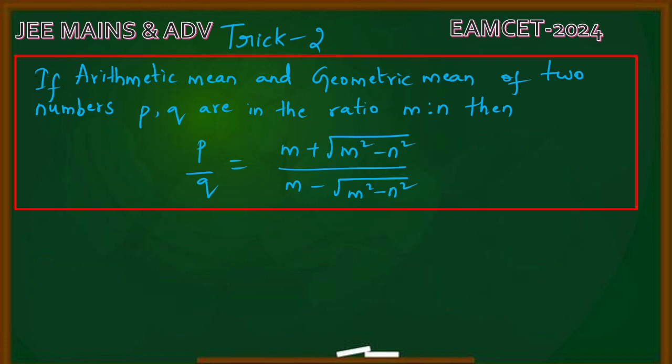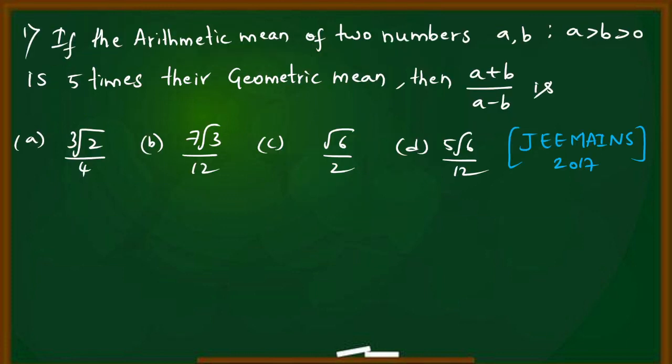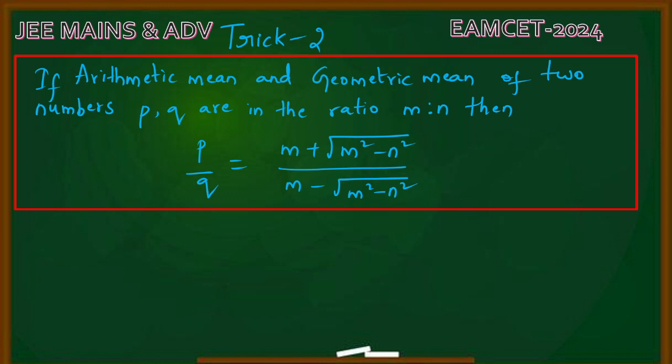Type 2 is important. In JEE Mains 2017, the same model question was asked. Trick number 2: If arithmetic mean (AM) and geometric mean (GM) of two numbers p, q are in the ratio m to n, then the ratio of the two numbers p/q equals [m + √(m²-n²)] divided by [m - √(m²-n²)].